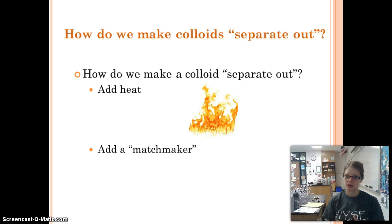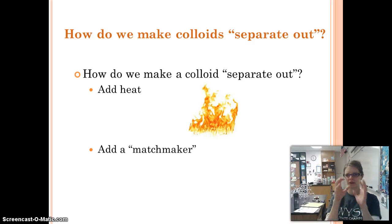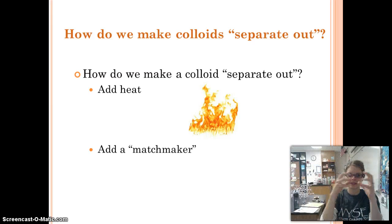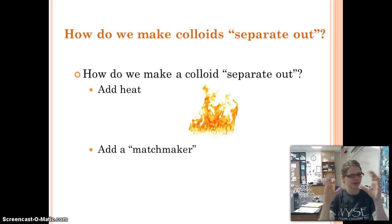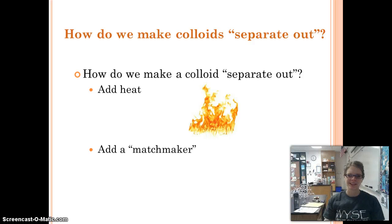Another way to separate a colloid is by adding a matchmaker — that's my term; they're often called enzymes, but don't have to be. If you have dispersed particles like those blue circles, a matchmaker takes one blue circle and another and sticks them together. Now you have two blue circles combined — that's too heavy for the repelling to keep up in the air, so it settles out. Matchmakers match up the dispersed parts so they can settle to the bottom.